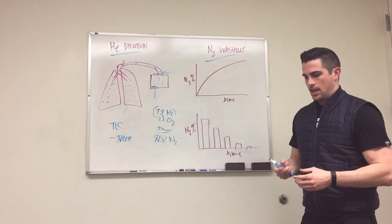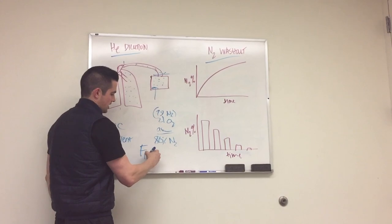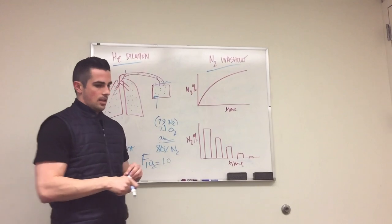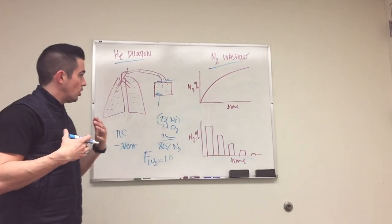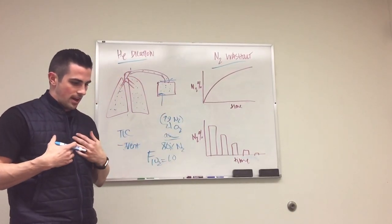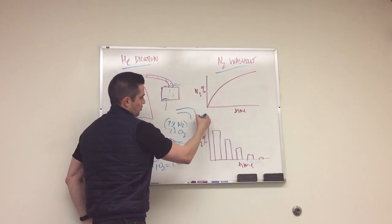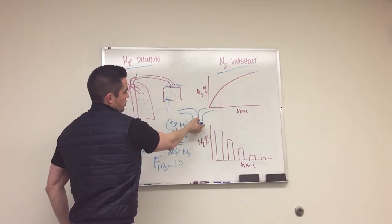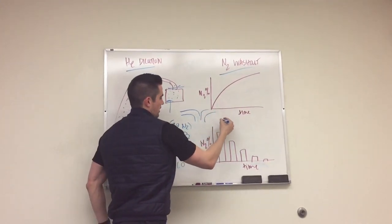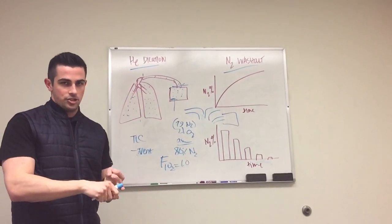And then they switch you on to 100% O2, which means that the FIO2 is going to be 1.0. That's what they're putting you on right now. And what they do is you breathe in one breath of air, and then it goes in one tube. And then through a different tube, there's another tube that goes out, and this tube goes out into a box.